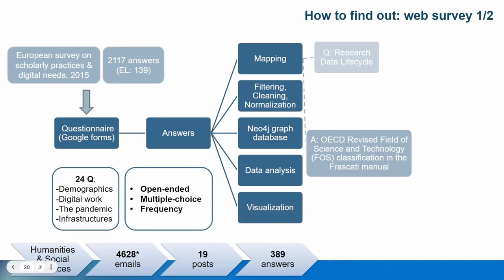To find out what users want, we created a questionnaire, taking into consideration previous related work — especially the European Survey on Scholarly Practices and Digital Methods Needs from 2015, which was based on almost 2,000 answers, 139 of which were from Greek researchers. Our questionnaire was circulated as a Google Form with 24 questions covering demographics, digital work, the pandemic's effect, and desired infrastructure needs, using open-ended, multiple choice, and frequency questions.